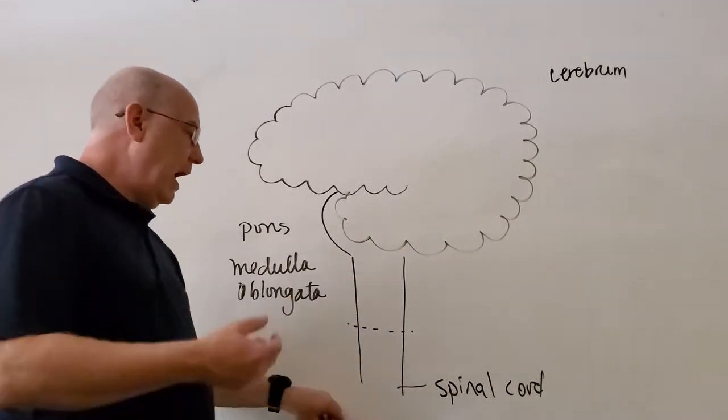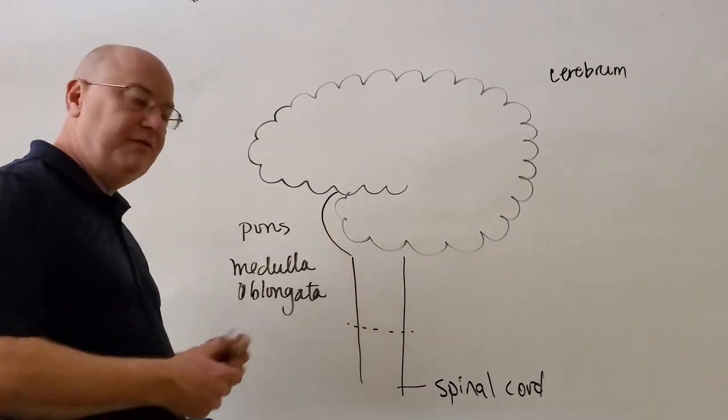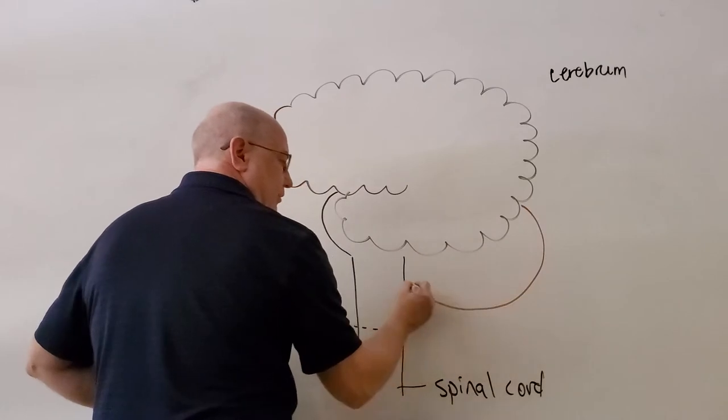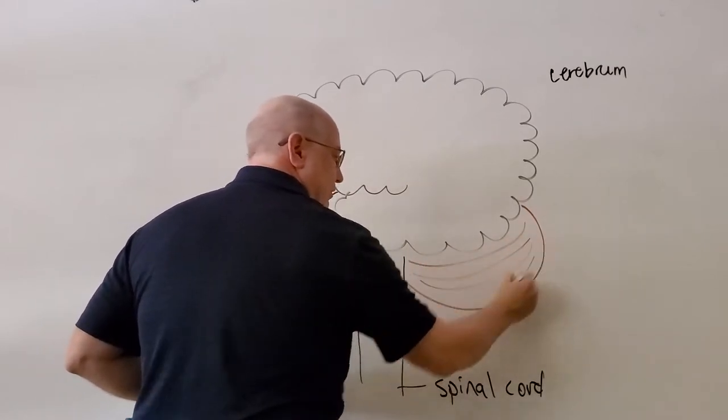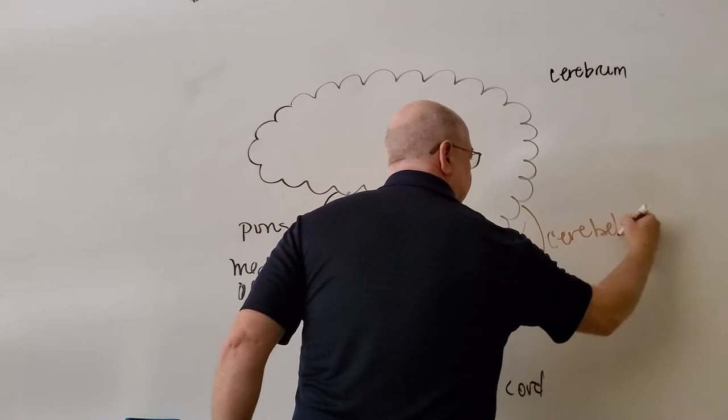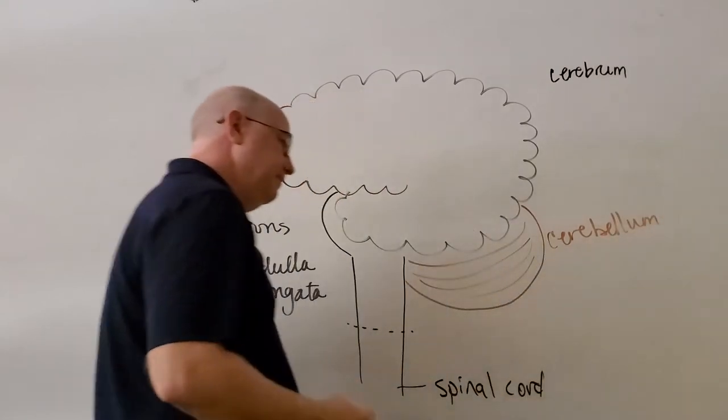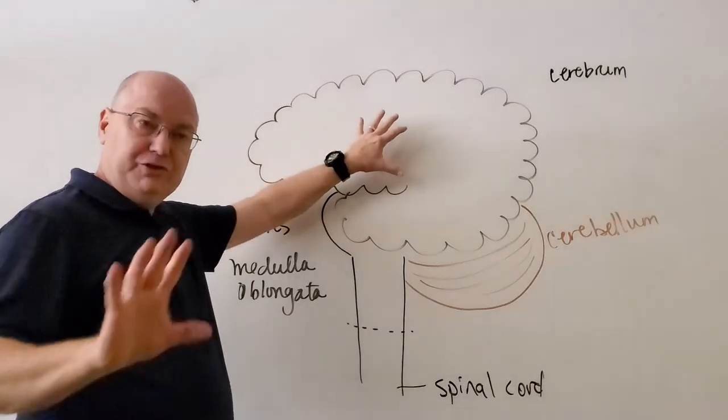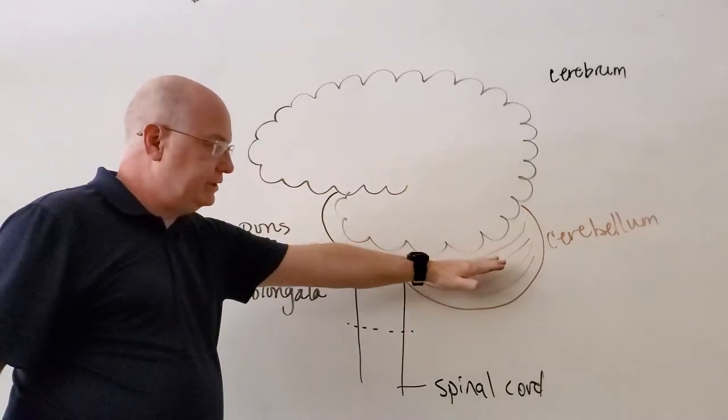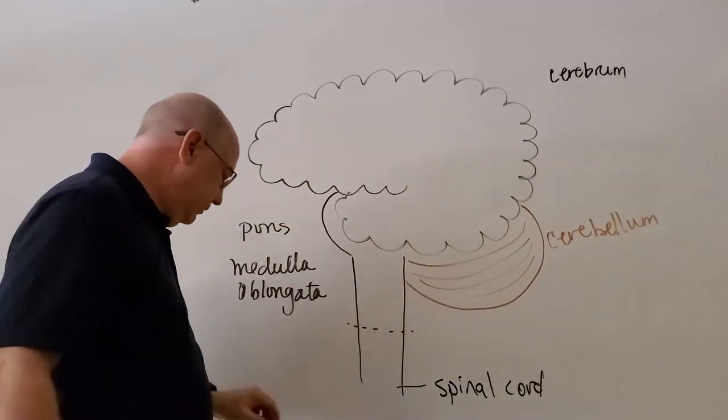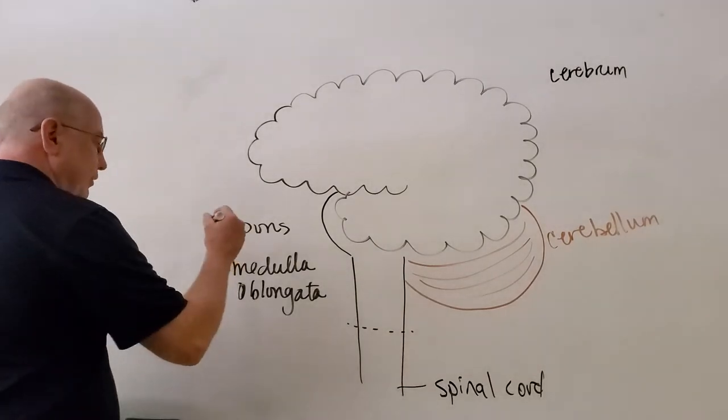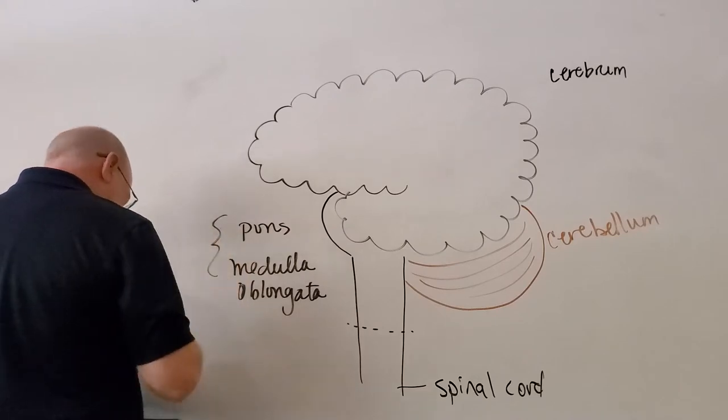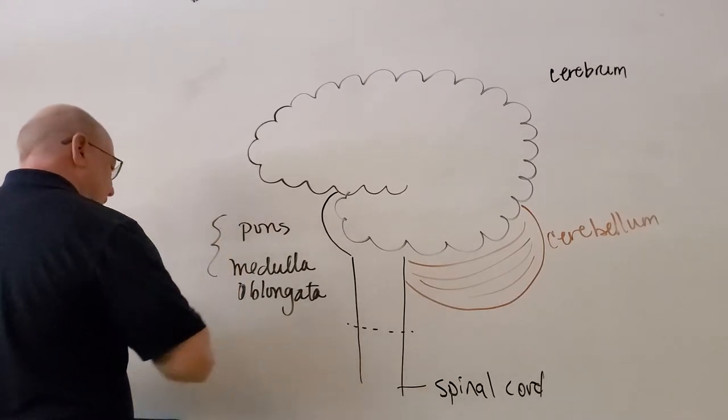Actually attached to the pons of the midbrain is this structure that usually appears kind of brownish on our models that's sitting back here underneath the cerebrum, and this structure is called the cerebellum. So now, we have four major structures: cerebrum and cerebellum, pons and medulla. And by the way, the pons and the medulla, and another structure very often called the midbrain, sometimes are referred to as the brain stem.